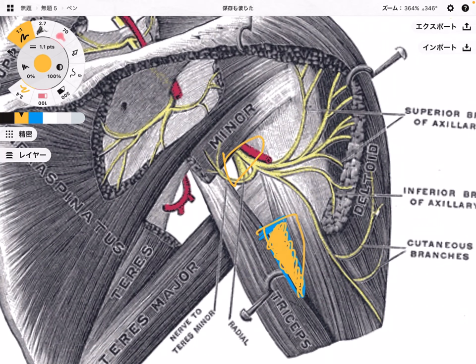In this video, I explained the basic anatomy of the posterior part of the scapula and shoulder joint, then nervous tissue, then important spaces. I hope this video helps your understanding of anatomy. If you liked today's video, please like, comment, and subscribe. See you in the next video.